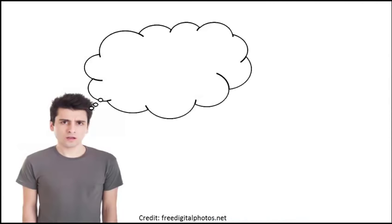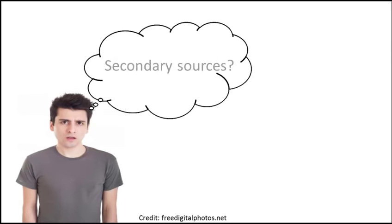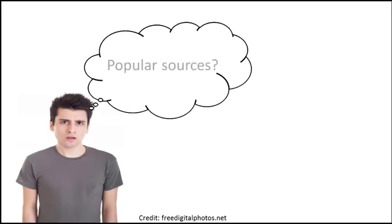There are all kinds of sources out there. You may have heard of primary and secondary sources, or scholarly and popular sources. These are terms that describe different types of sources based on who produced them or how they were produced. Knowing the differences between them and what each are good for is valuable. However, all of those types of sources may be useful for your research, depending on what sorts of evidence you need. So instead of thinking in terms of sources, think about what types of evidence will make your case or answer your question.